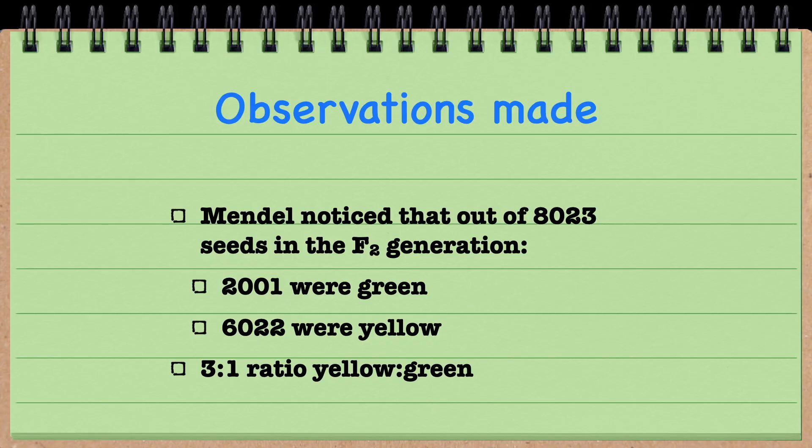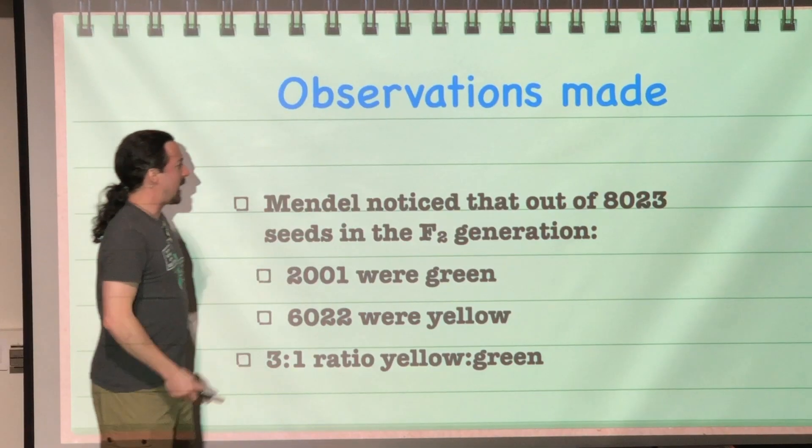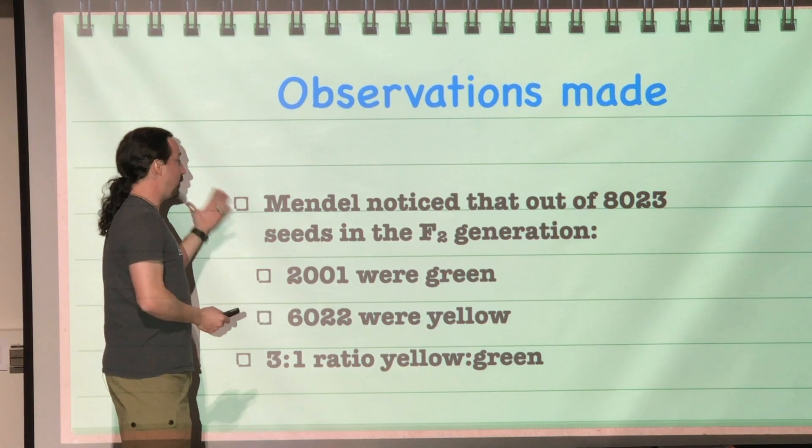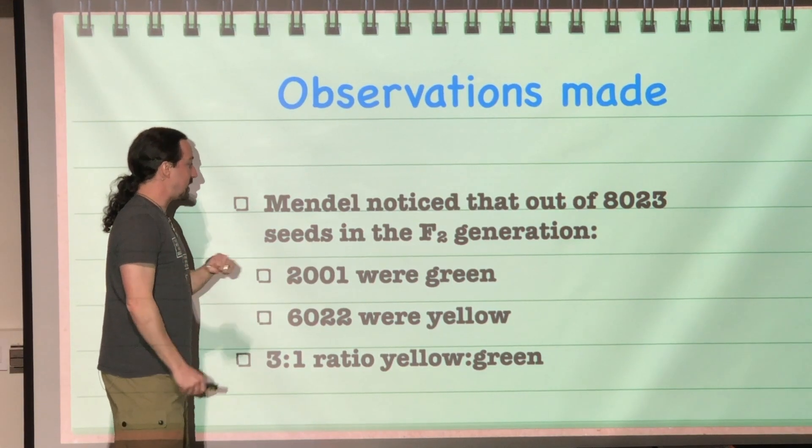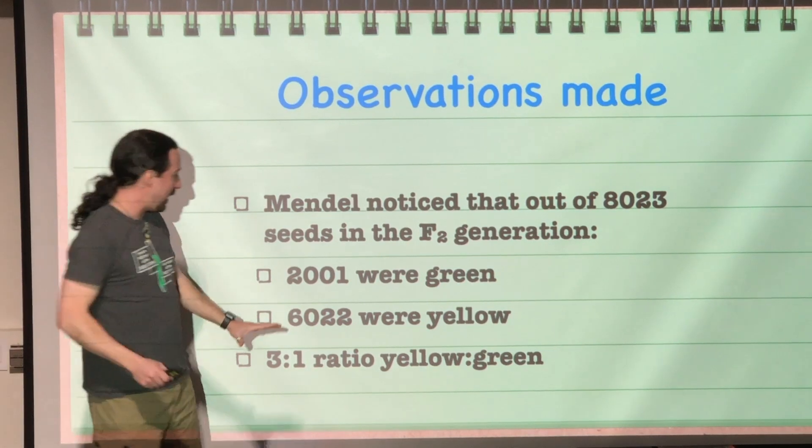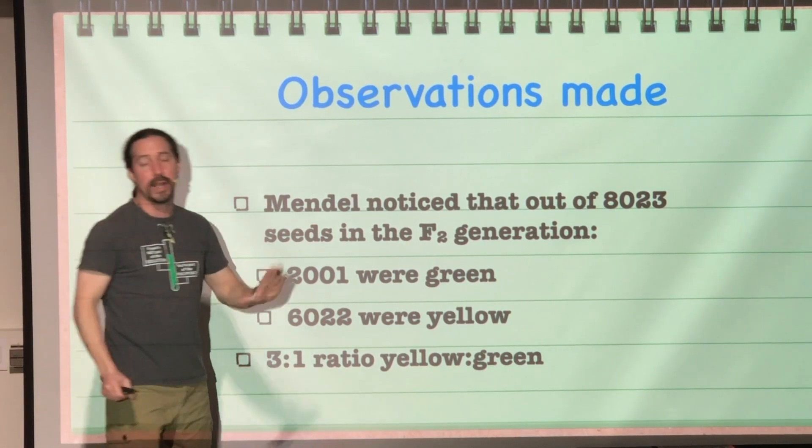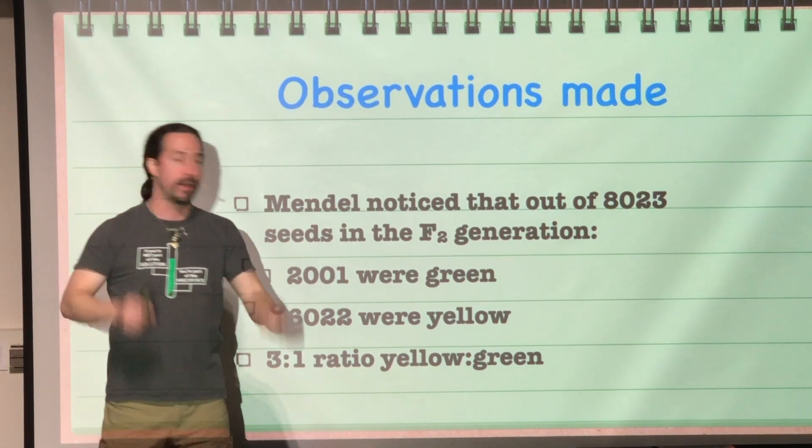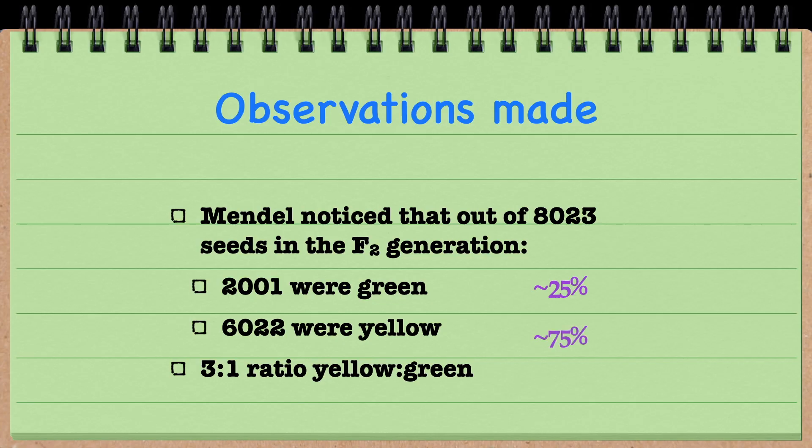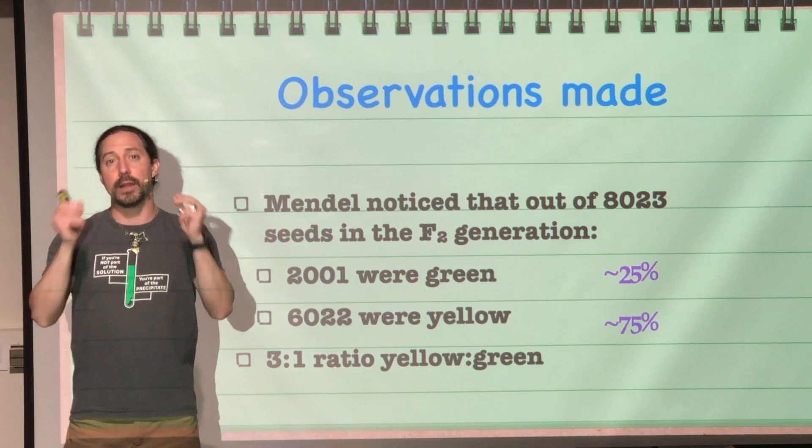He didn't do this once or twice. He noticed that out of 8,023 seeds in the F2 generation, 2,001 were green and 6,022 were yellow, giving about a three-to-one ratio of yellow to green. In other words, about 25% were green and 75% were yellow. Through this, he was able to make some very important conclusions.